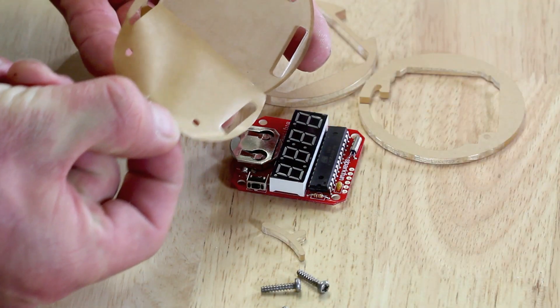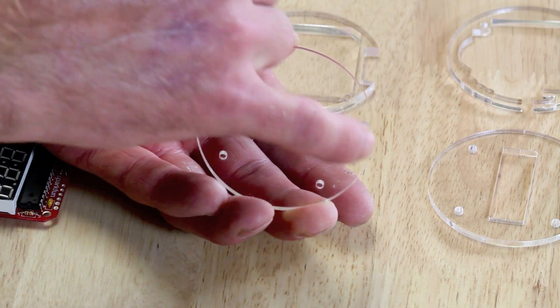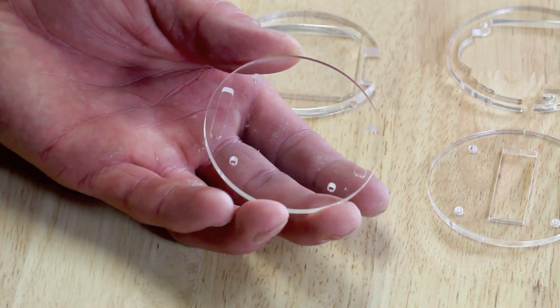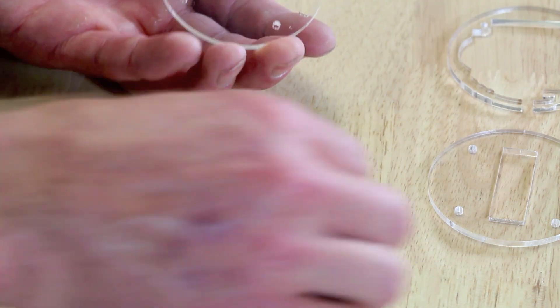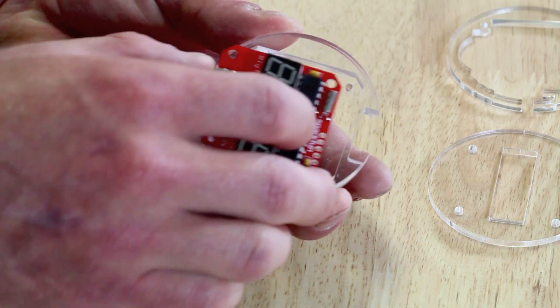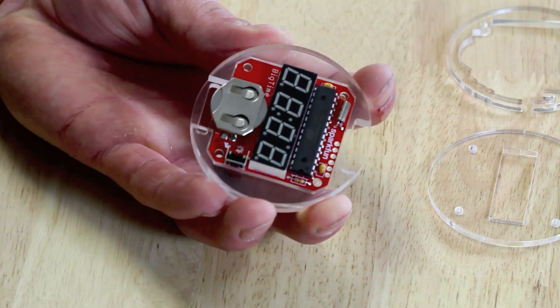You should be able to peel it back and reveal the clear piece of acrylic underneath. The bottom layer is this little guy here with the two slits for the watch band and the four screw holes that will hold everything together. The next layer is this guy that we're just going to sit right on top and hold in place for now. Next we have the circuit board itself, the one you just assembled. And with any luck it should fit pretty snug right into there.